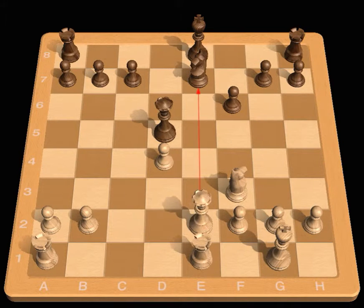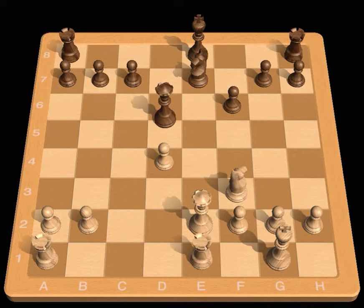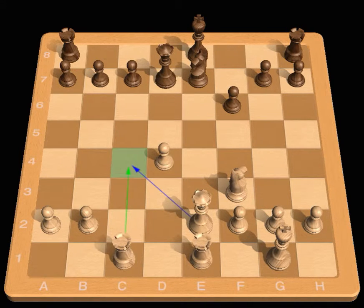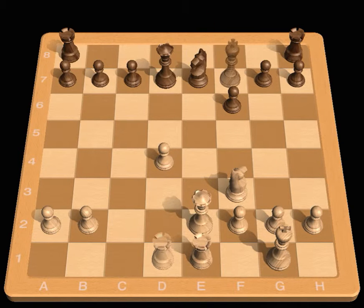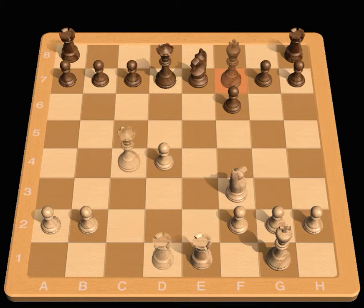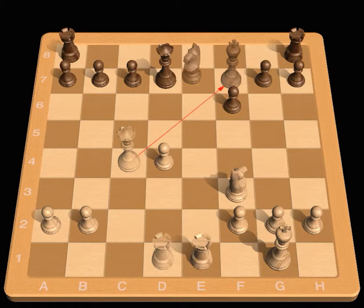Queen e2, Queen d7, Rook c1. A more effective continuation was the centralizing move Rook d1 with one nice point illustrated after King f7, Queen c4 check, Knight d5. Now the thematic shot, Knight e5 check.